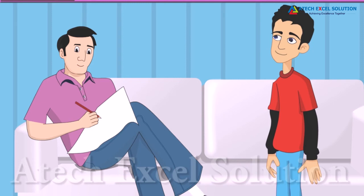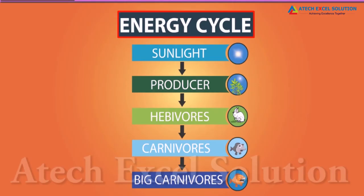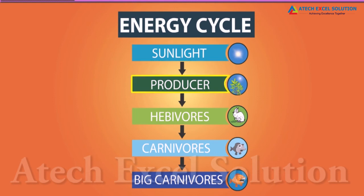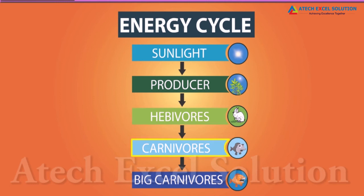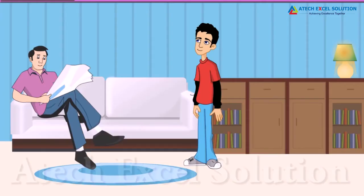Energy is also used to do work. Let me draw a diagram to show the transfer of energy. Sunlight is first made available to producers. The producers then become available to herbivores. The herbivores are then eaten by carnivores, and they are finally eaten by big carnivores. So we can say that the food chain is the cycle through which everyone gets their energy.